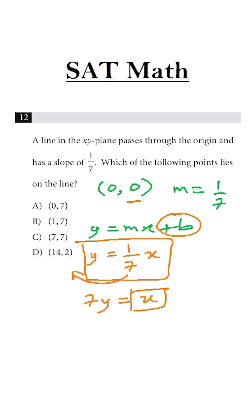Can we see any point where x is 7 times the y value? Here no, no, no, but here x is 7 times this 2.